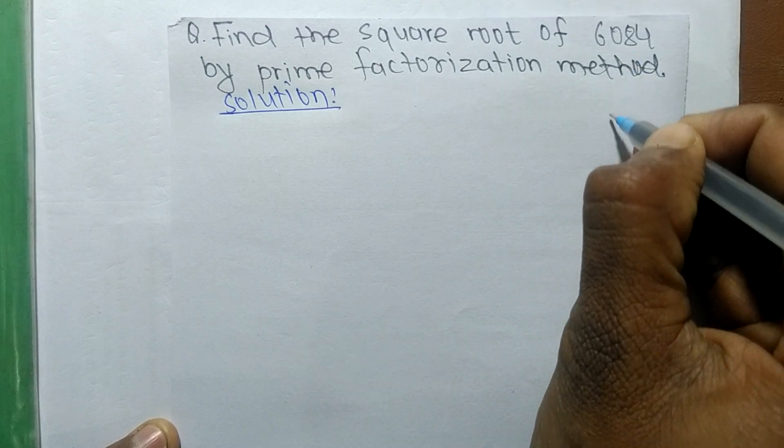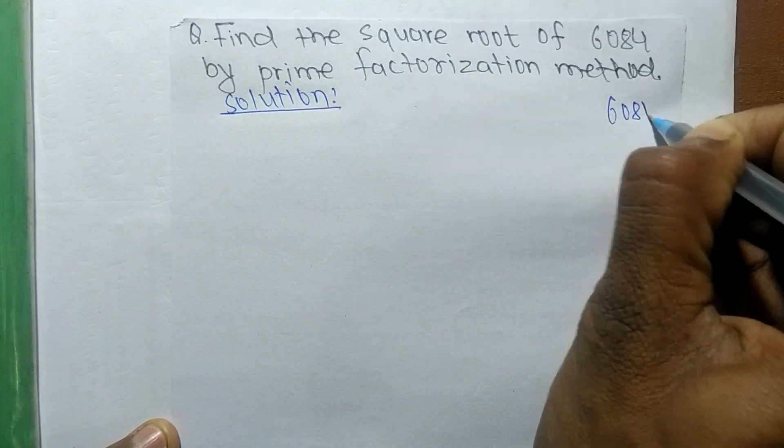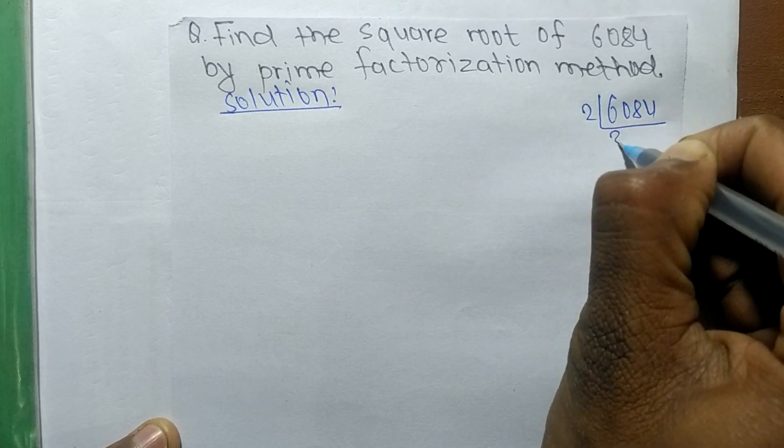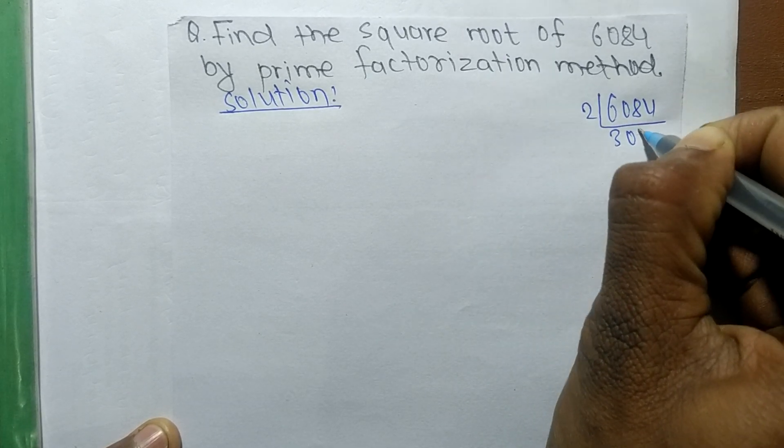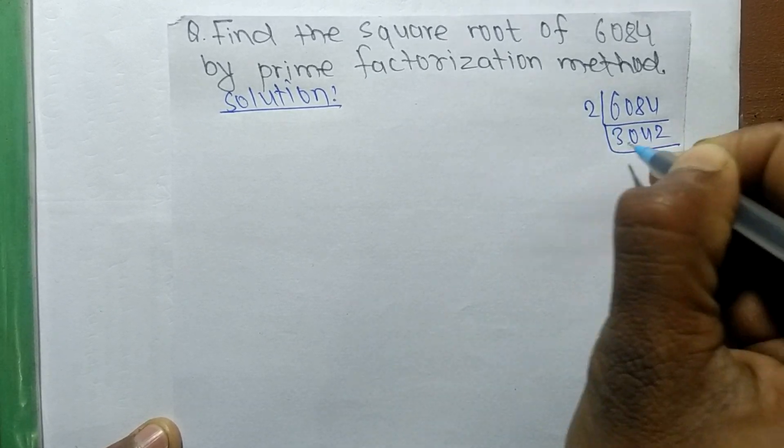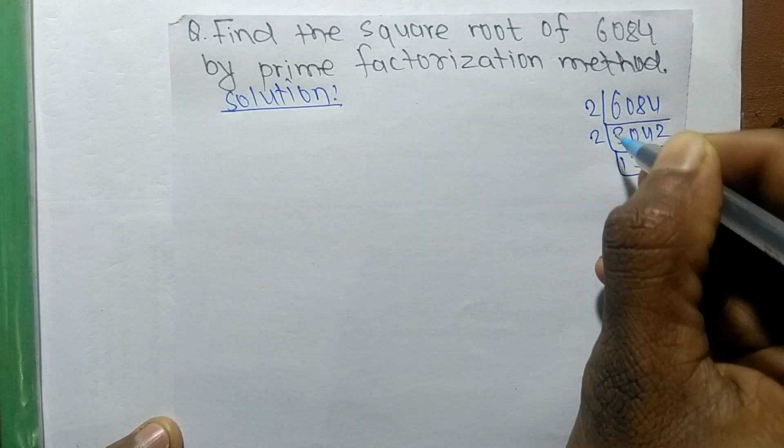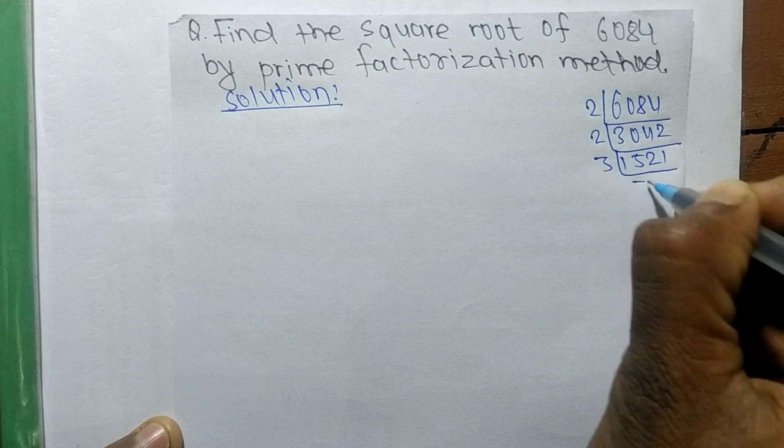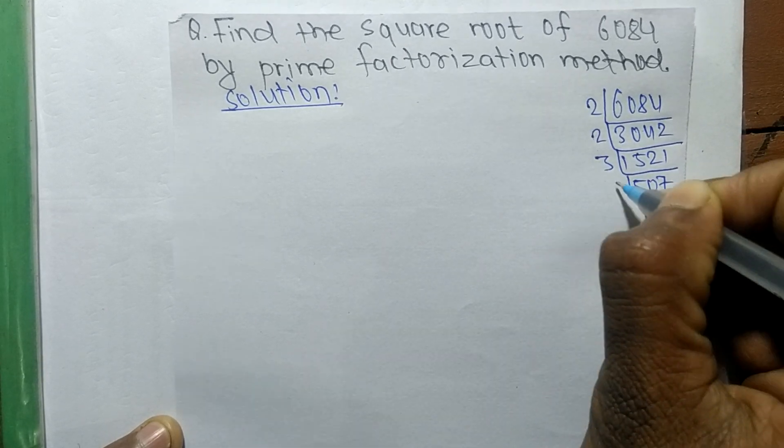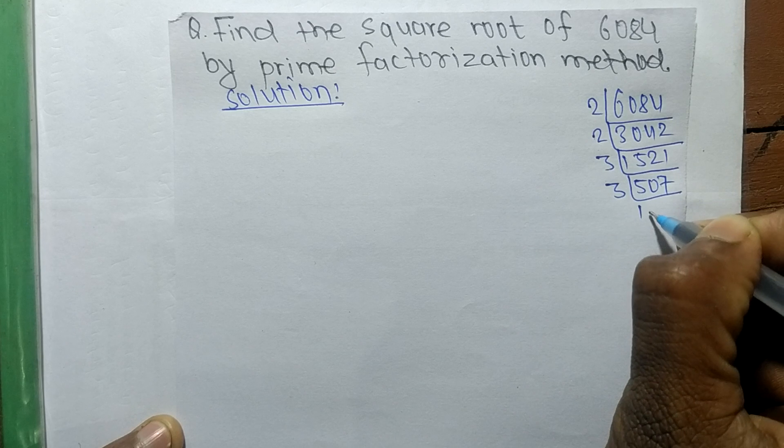First, we find out the prime factors of 6084. So 2 divides 6084 to get 3042. Again, 2 divides 3042 to get 1521. Again, 3 divides 1521 to get 507. Again, 3...